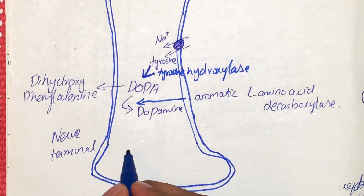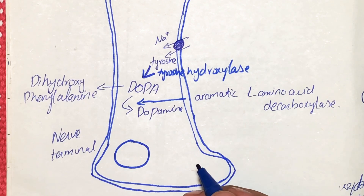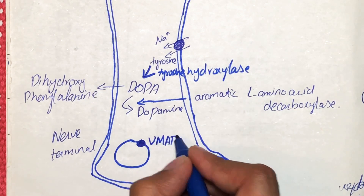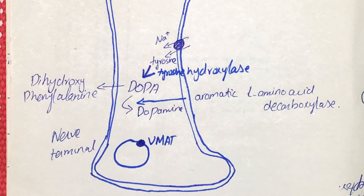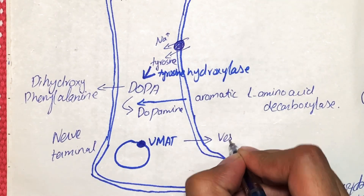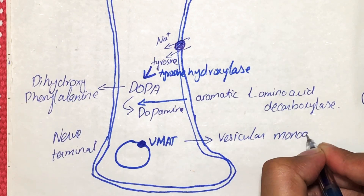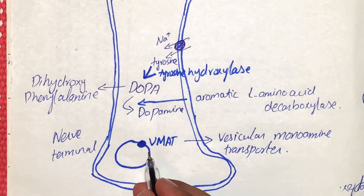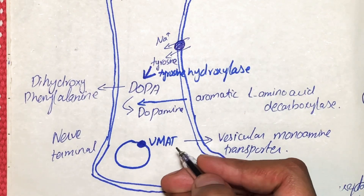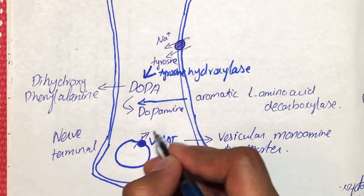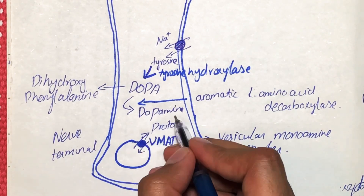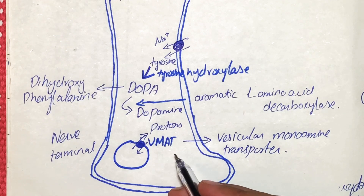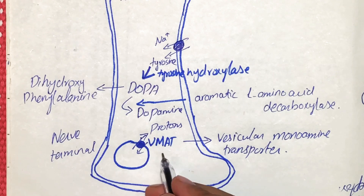After that, we have synaptic vesicles present in the cytoplasm of the pre-synaptic neuron. These vesicles have a transporter called VMAT, which stands for vesicular monoamine transporter. VMAT is an antiporter — it causes the efflux of protons and the influx of dopamine present in the cytoplasm, exchanging protons for dopamine.